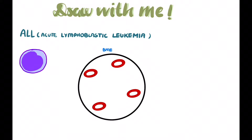Today we shall be going over some of the characteristic blood pictures and bone marrow aspirates of leukemias. First up we have acute lymphoblastic leukemia.